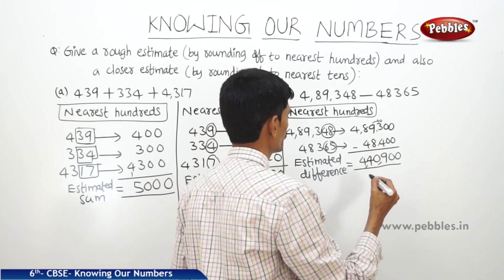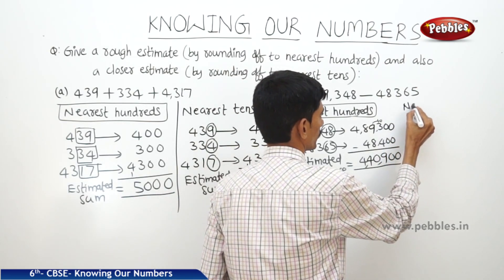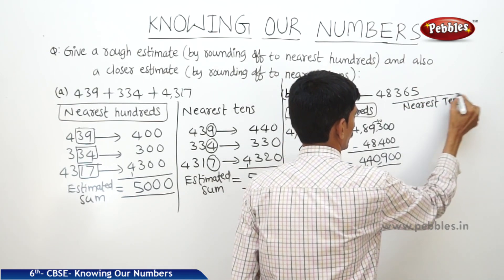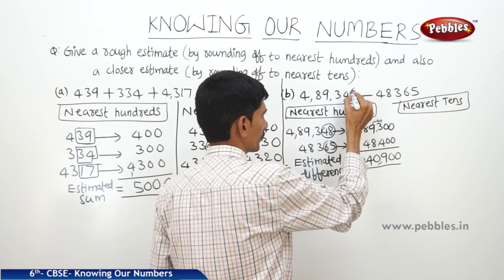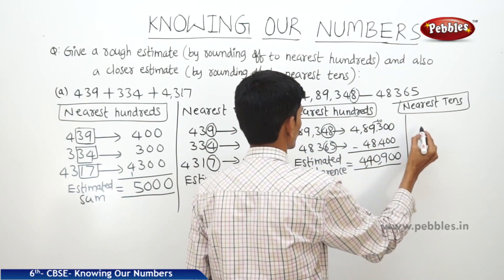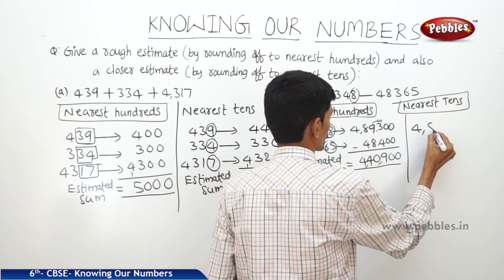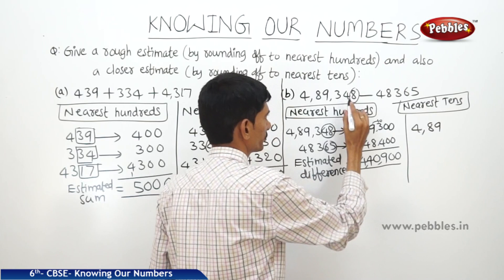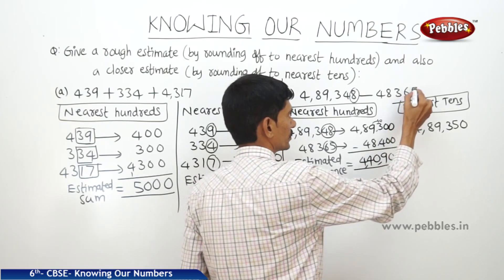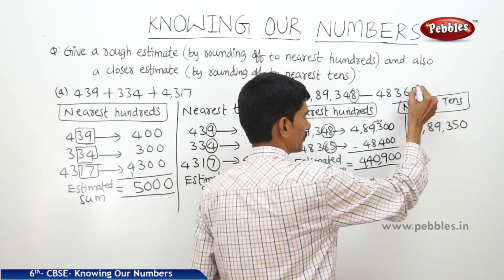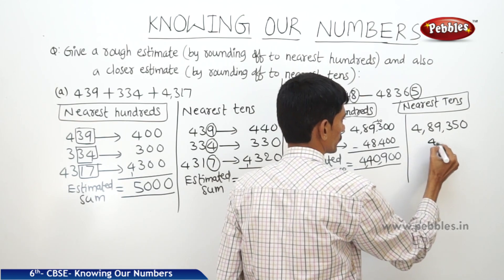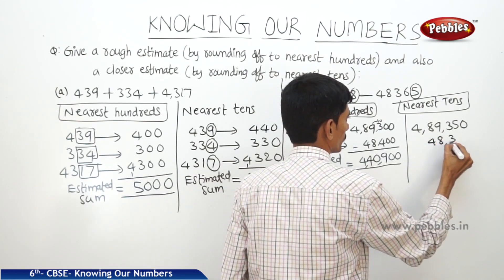So when you correct to the nearest tens — the first number: the ones place is 8, which is more than 5, so it will become 4,89,350. And the second number, if you round off to the nearest tens, the ones place is 5, so we take the next ten: 48,370.